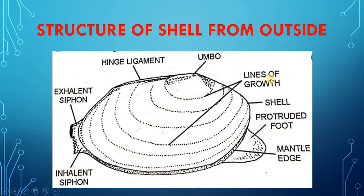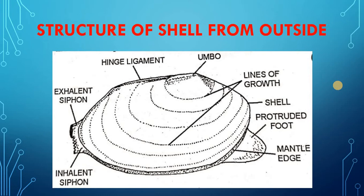Concentric rings or lines of growth start from the umbo and successively pass on to the free edge of the shell wall. In the anterior dorsal side and extending backwards is a dark-colored hinge ligament, which helps in opening the shell valves and by which the valves are united.